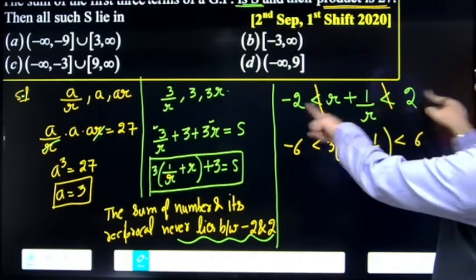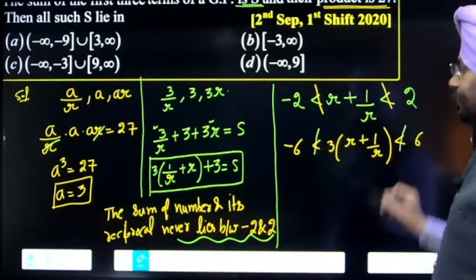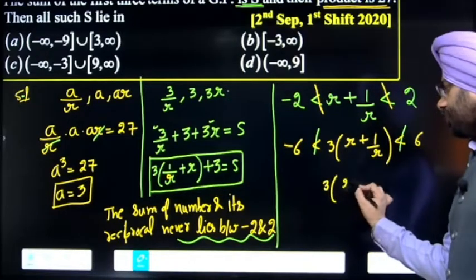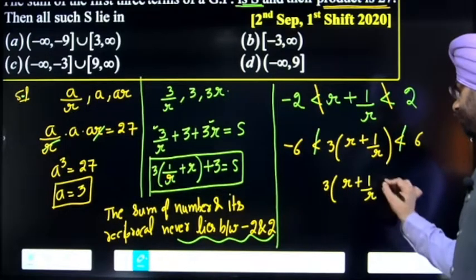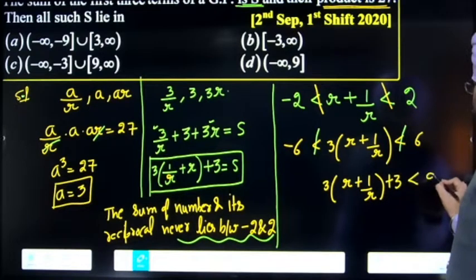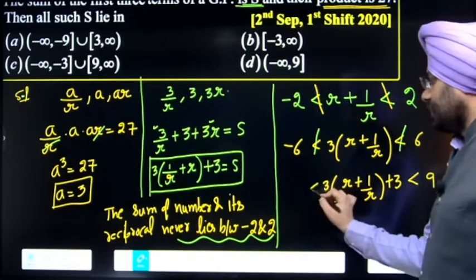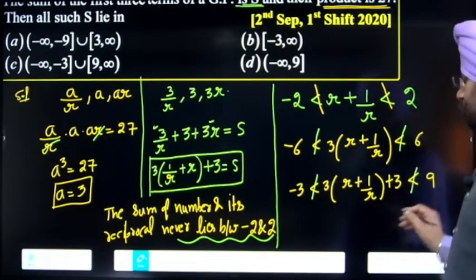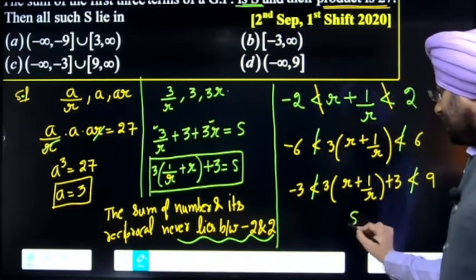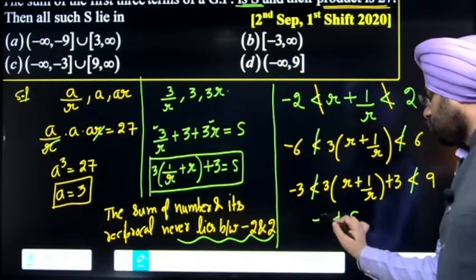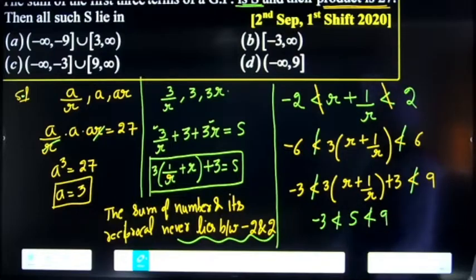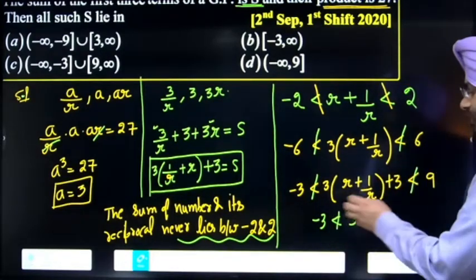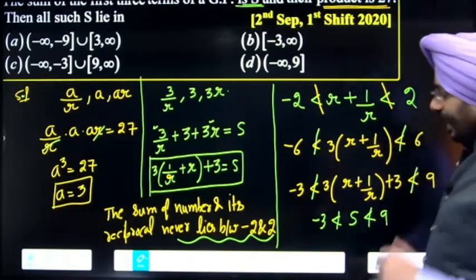Multiplying by 3 in all terms, 3(r + 1/r) does not lie between -6 and 6. Adding 3 to all parts, S = 3(r + 1/r) + 3 does not lie between -3 and 9. So the number does not lie between -3 and 9.